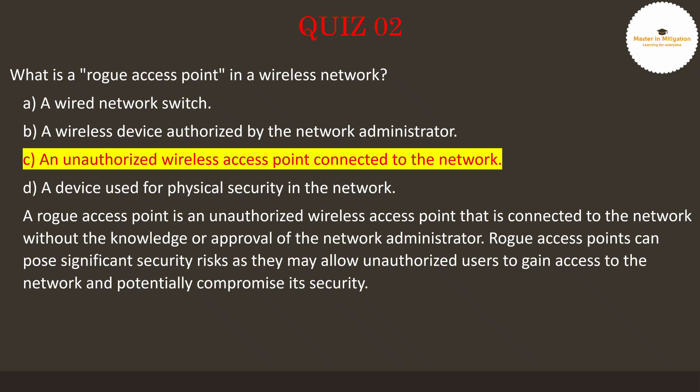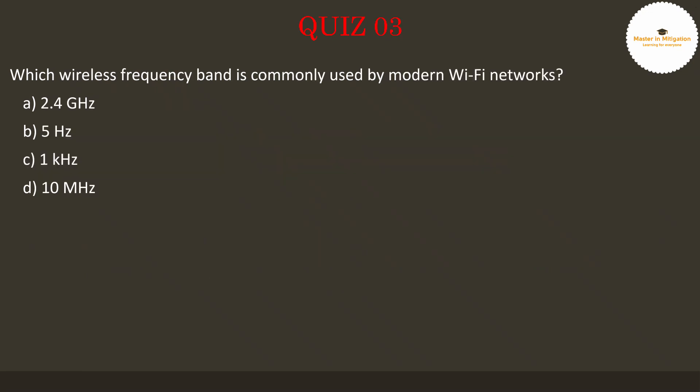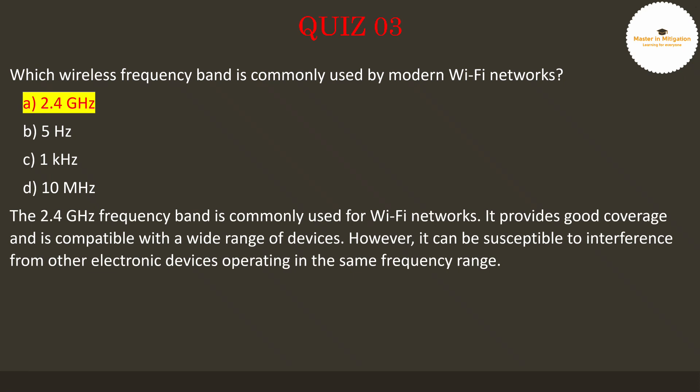Let's proceed to the next question. Question 3: Which wireless frequency band is commonly used by modern Wi-Fi networks? Pause the video now to select the best answer. The answer is 2.4 GHz. The 2.4 GHz frequency band is commonly used for Wi-Fi networks. It provides good coverage and is compatible with a wide range of devices. However, it can be susceptible to interference from other electronic devices operating in the same frequency range.